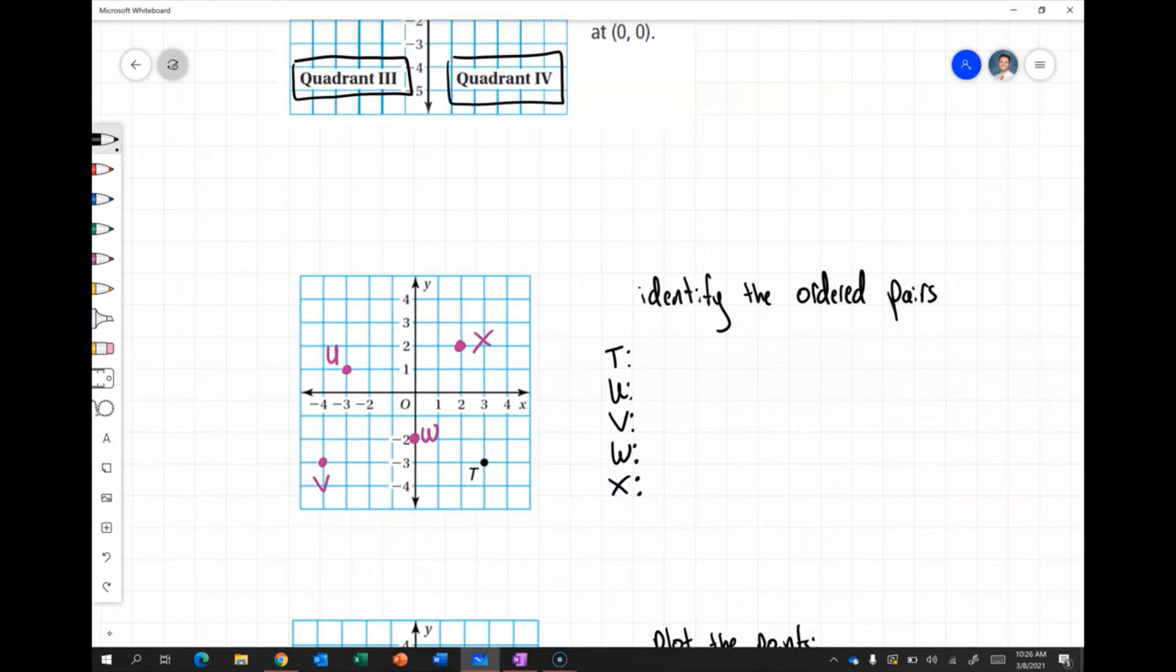So starting with T. Okay I can see that T here is at 3 on the x-axis. This is my x-axis. I find 3 and it's at negative 3 on my y-axis. So I could say that T is at the point 3, negative 3.